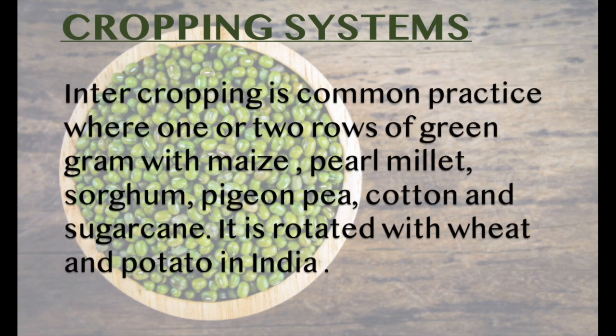Cropping systems: Intercropping is a common practice, where one or two rows of green gram are grown with maize, pearl millet, sorghum, pigeon pea, cotton, and sugarcane. It is also rotated with wheat and potato in India.